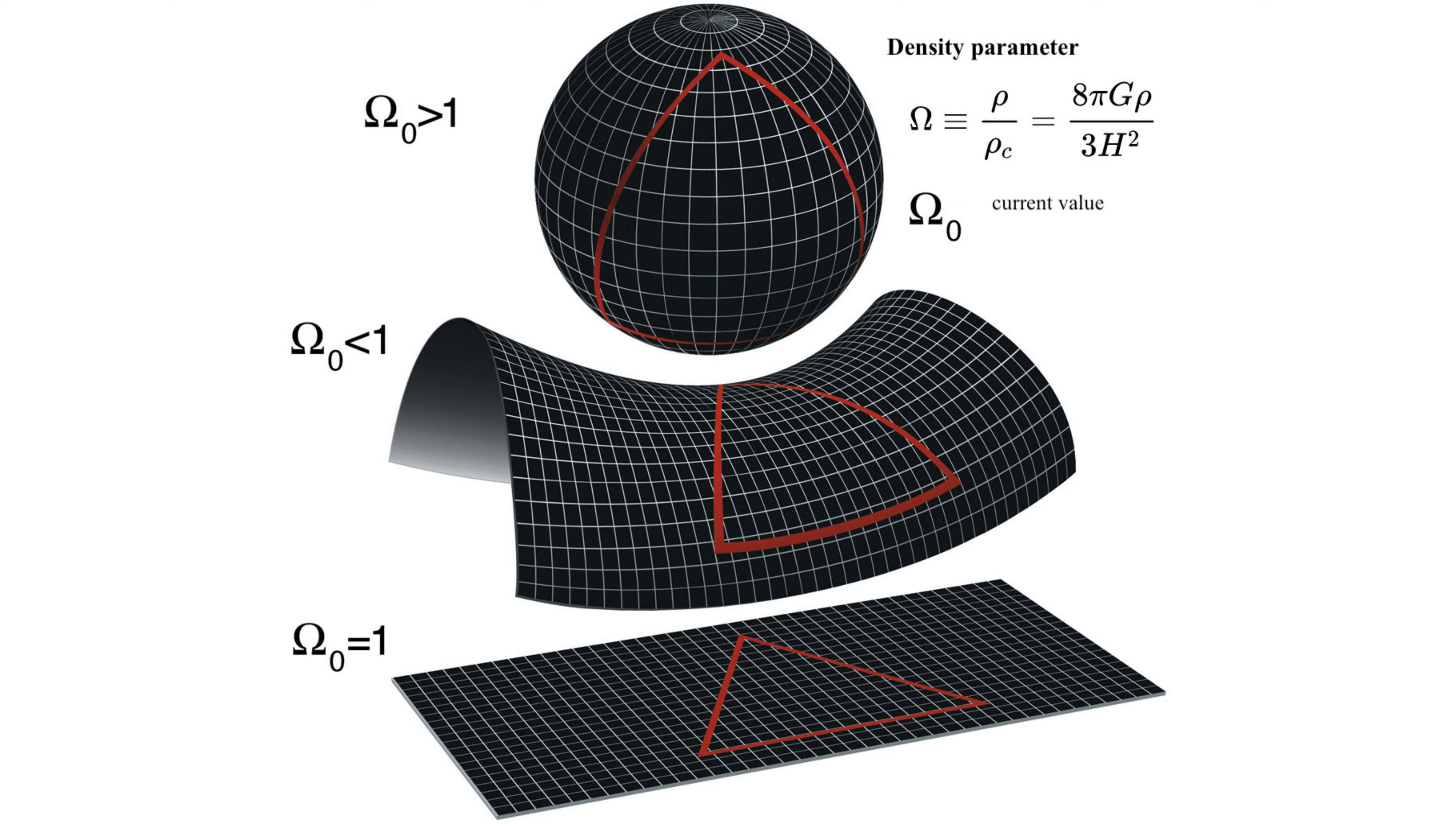When we say the universe is flat, we are not talking about how it looks. Instead, this flatness means the rules of Euclidean geometry hold true on large scales. The sum of angles in triangles still adds up to 180 degrees. Again, the flatness we are talking about is the absence of curvature, not a definite form, not like a sheet of paper.